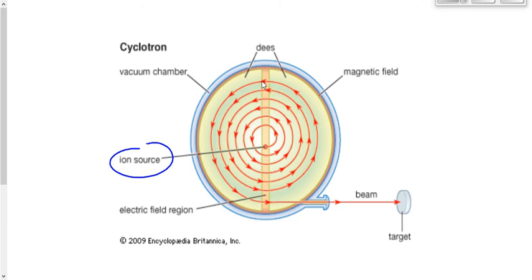This charged particle right now is going in a perfect circle. What happens when it goes across the Ds? The gaps? The gap, I should say?